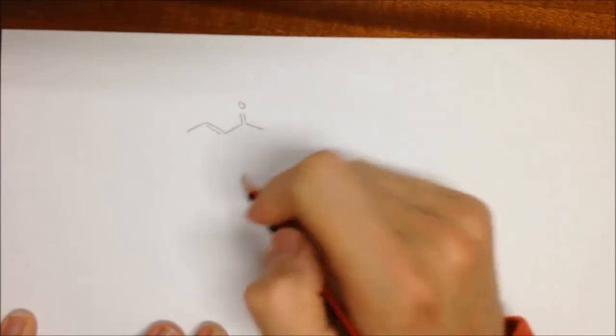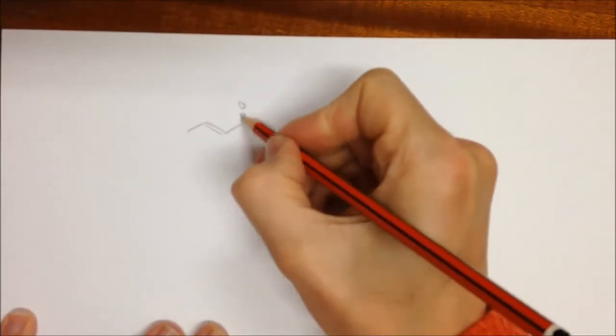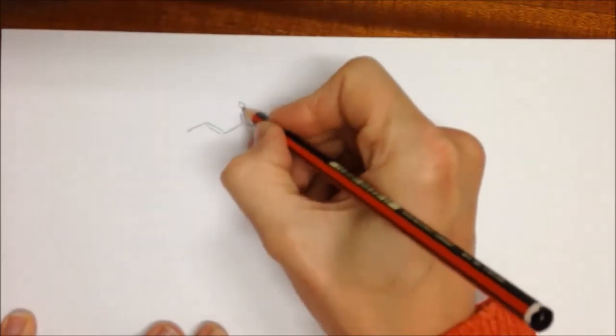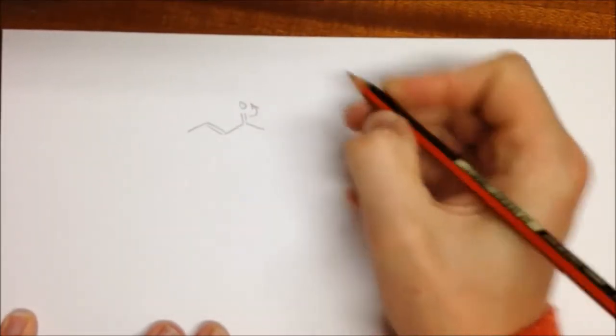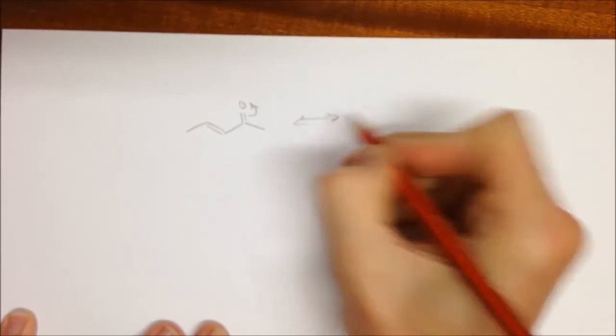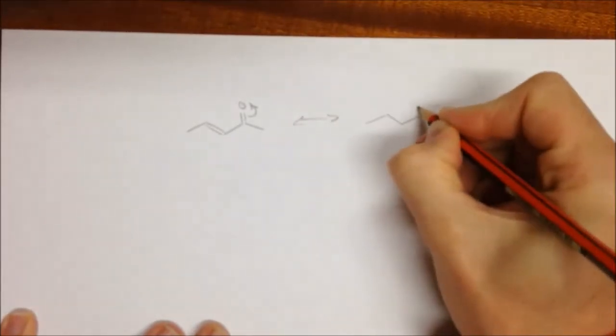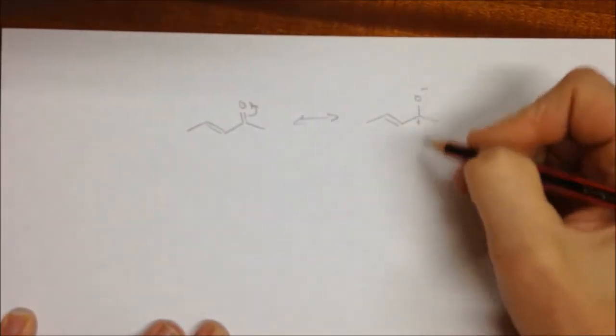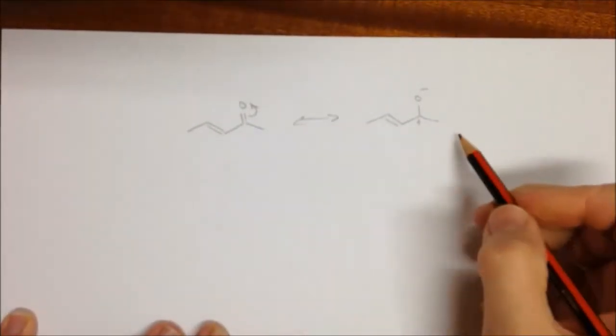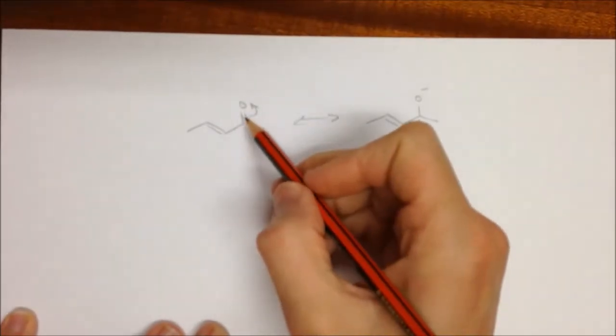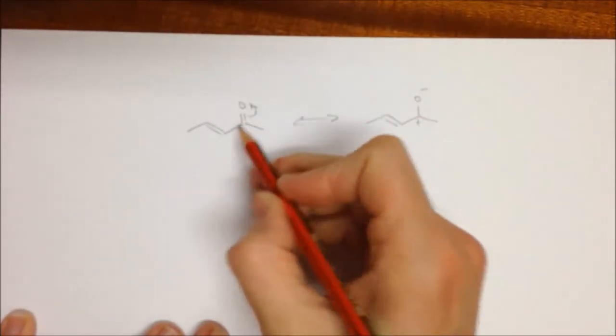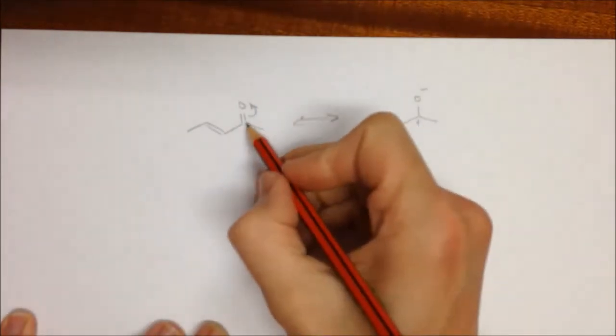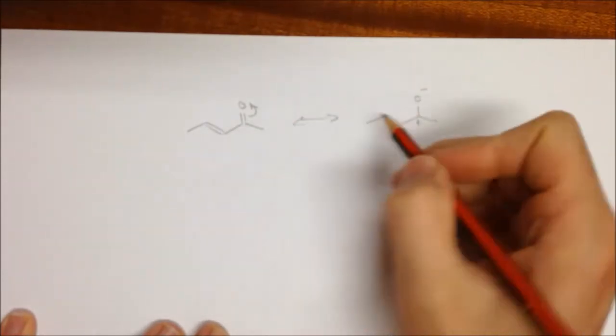When we first introduced you to Grignard reactions back in first year, we said that a carbonyl group could actually be drawn out in a resonance form. If we break this pi bond, we could move the electrons onto the oxygen, and we could draw out a resonance form of it, which looks like this, O minus, and of course a plus over there. We said that this is one way of thinking about a carbonyl group, and it explains why the carbon of a carbonyl is the electrophile in reactions.